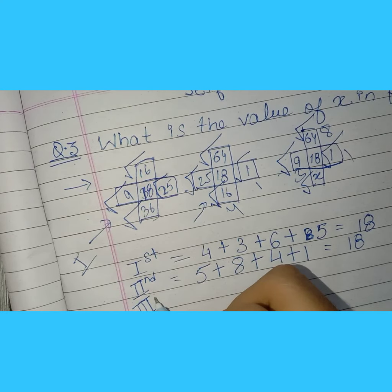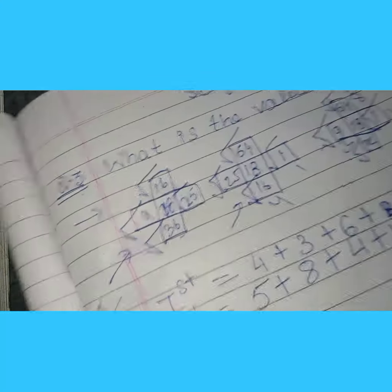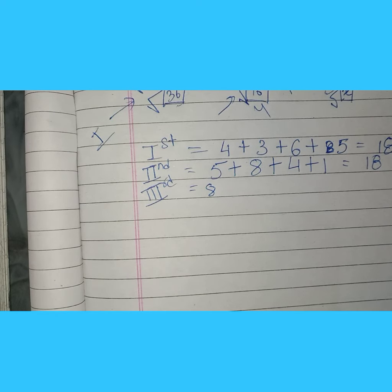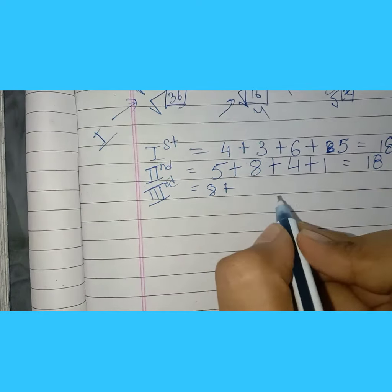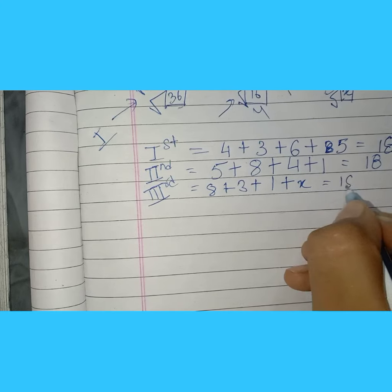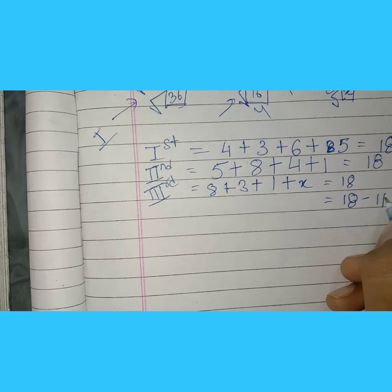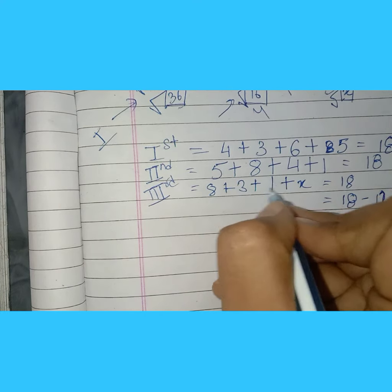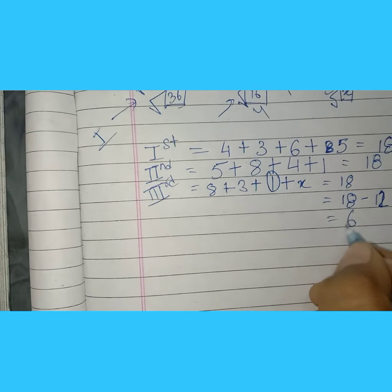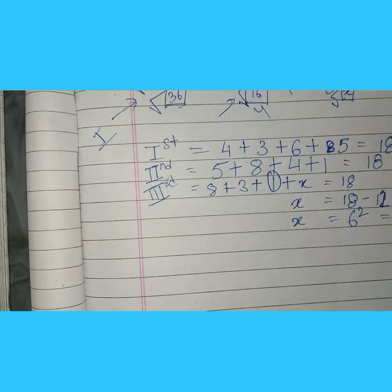Now the third column: 8 plus 3 plus 1 plus x equals 18. So 18 minus (8 plus 3 plus 1) equals 18 minus 12 equals 6. Therefore x equals 6, and the square of 6 is 36. So our answer is confirmed: it's 36. Now let's move to the second question.